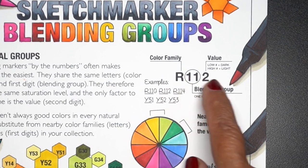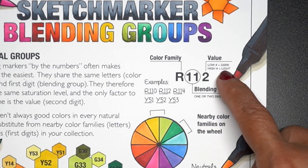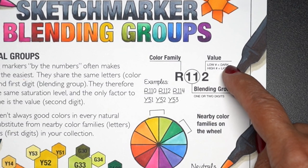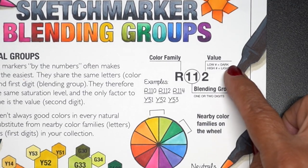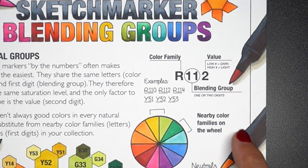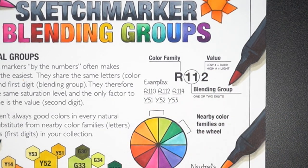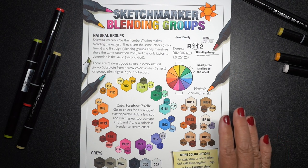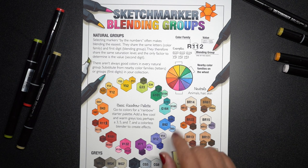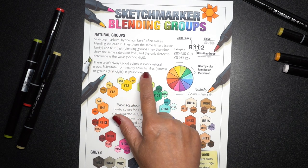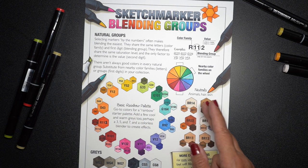There's a number or pair of numbers in the middle and a value at the end. The value is the light and darkness. A low number in Sketchmarker is dark and a high number is light — it's the complete opposite of Copic, if you're used to using those. A blending group uses all three of these because the group is those numbers in the middle. If you choose the same letter and middle numbers and then jump to a different value for light and dark, you'll be able to pick colors — and that's how I chose the ones in the graphic here.